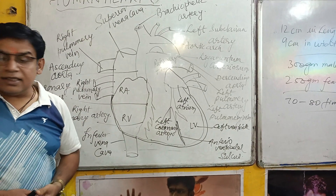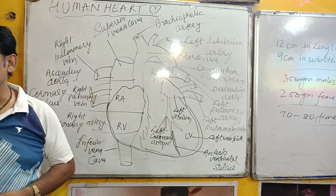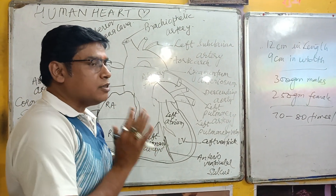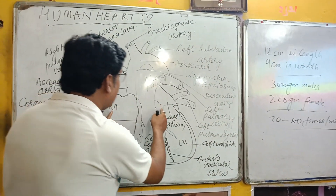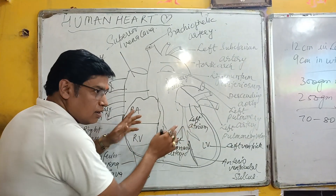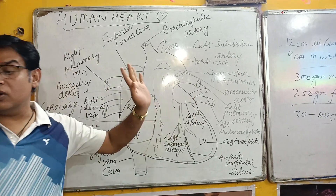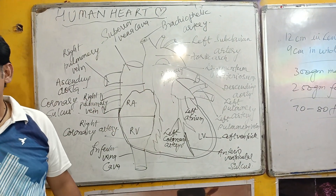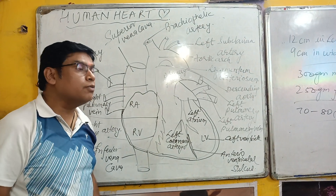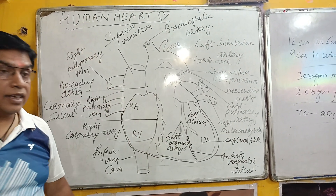The auricles form the small upper part of the heart. They have thin walls. Each atrium has an appendage which is dog-shaped, and that is why these structures are called auricles.